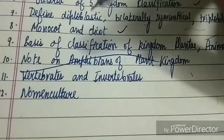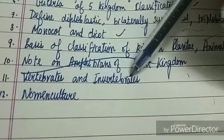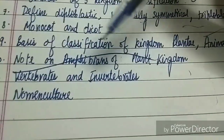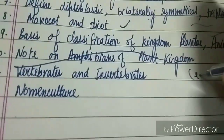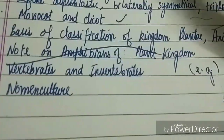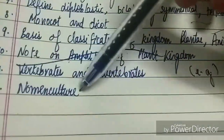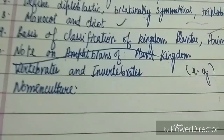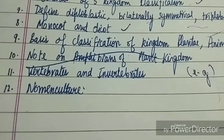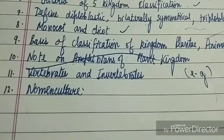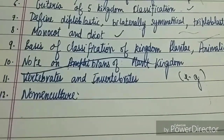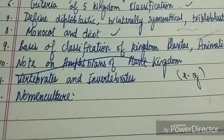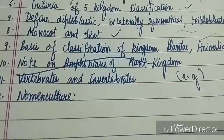The difference between vertebrates and invertebrates can come or they can be asked separately. Learn the examples, as they are very important. The last important concept is nomenclature — read this paragraph carefully from the last page of the chapter in the book.